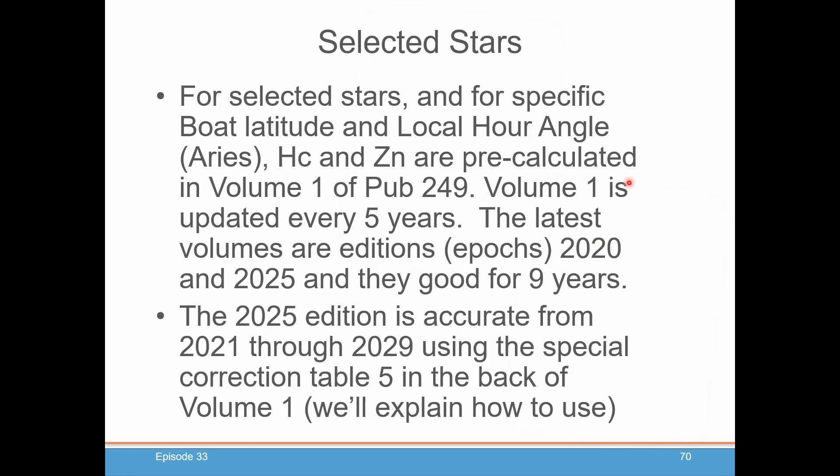For Selected Stars, and for specific both latitude and local hour angle, HZ and ZN will be pre-calculated for you. Volume 1 is updated every five years. The latest volumes are editions called Epochs of 2020 and 2025, and they are good for nine years. For example, the 2025 edition, which is the one you can purchase now, is accurate from 2021 through 2029, as long as you use the special correction table number five in the back of Volume 1.